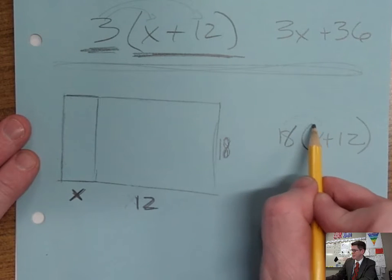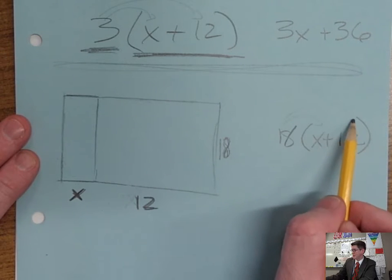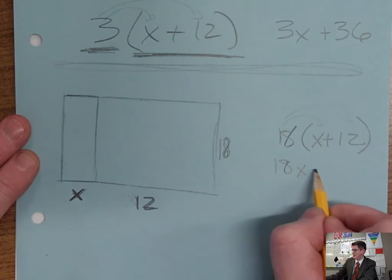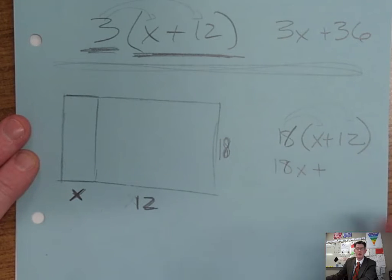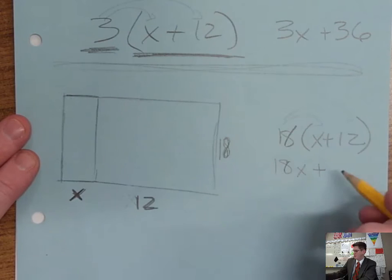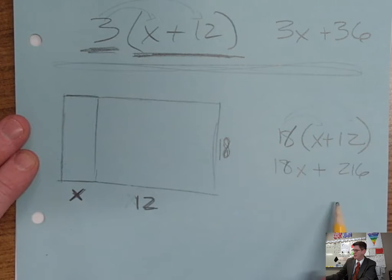And then you can take the 18 and multiply it by the x and take the 18 and multiply it by the 12. So we're left with 18x plus whatever 12 times 18 is. And your calculator will give you the answer. 18 times 12, that's 216.